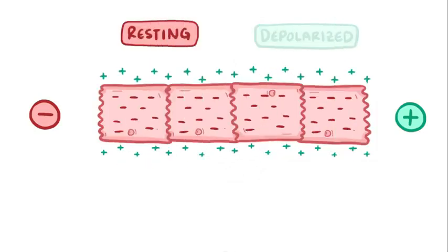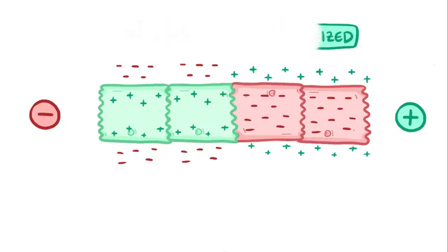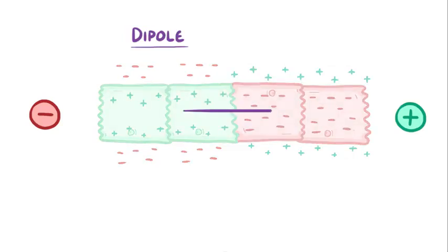Now, if we freeze this wave of depolarization as it's moving through the cells, half of the cells are positive, or depolarized, and half are negative, or resting. And so there's a difference of charge across this set of cells. You can think of the charge difference as being a dipole because there are two electric poles. And we can draw this dipole out as an arrow or vector pointing towards the positive charge.